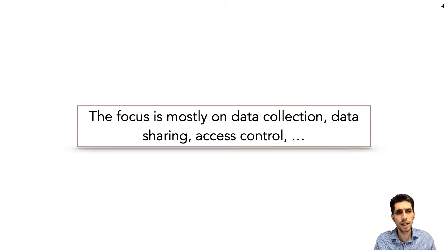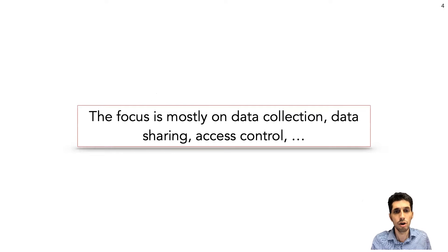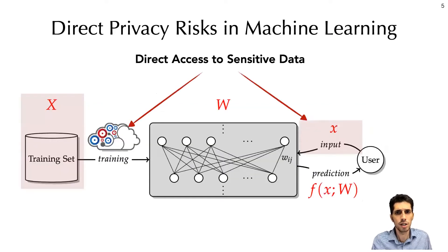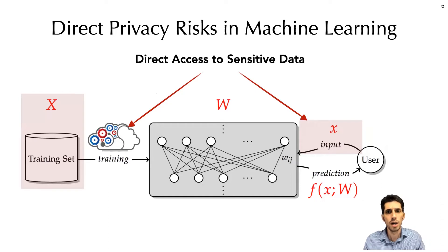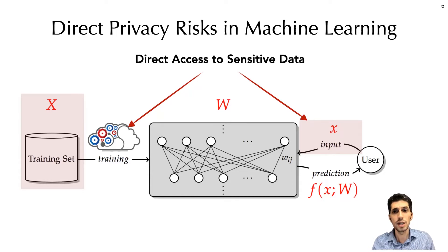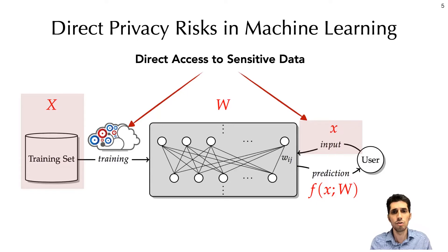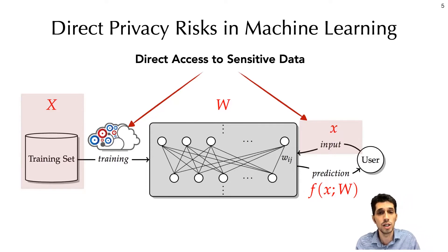However, the focus is mostly on data collection, data sharing, access control, and basically all different ways that privacy and private information could be directly leaked to unauthorized entities. In a machine learning pipeline, this is concerned with the entities that store the training data and run the training algorithm, and the servers that host the trained model, get the input query data, and compute the predictions. Obviously, the training data and the input queries could be very sensitive and contain personal information, and access to such data needs to be limited to authorized users, and the algorithms need to preserve the confidentiality of data.